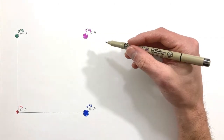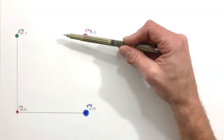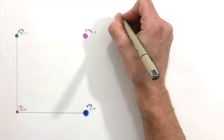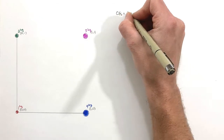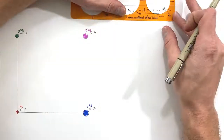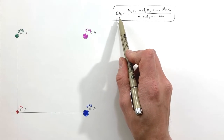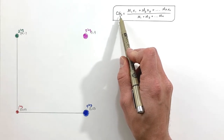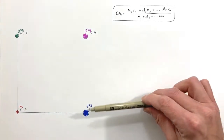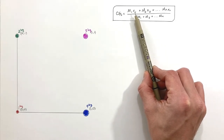We're going to use the center of gravity equation to find the center of gravity in both the x and y axes. Starting with the x-axis, the center of gravity is given by this equation, which tells us the location along the x-axis where the center of gravity lies — that is, where along the horizontal axis the center of gravity is. This involves looking at the mass and position of individual particles.